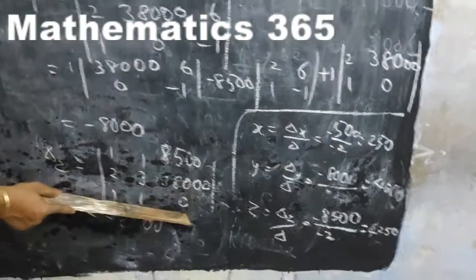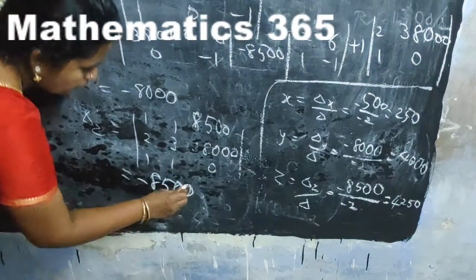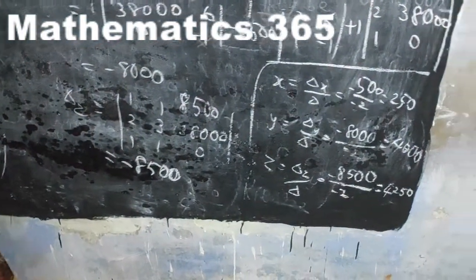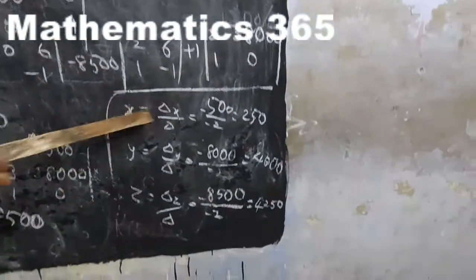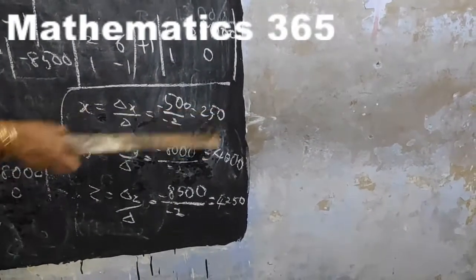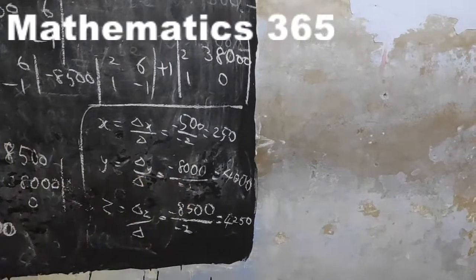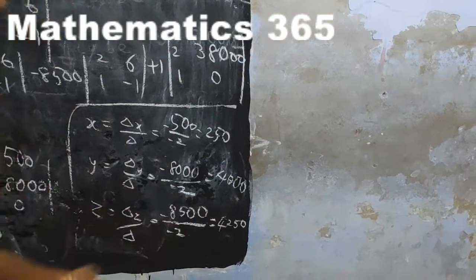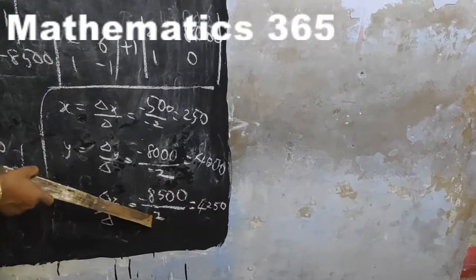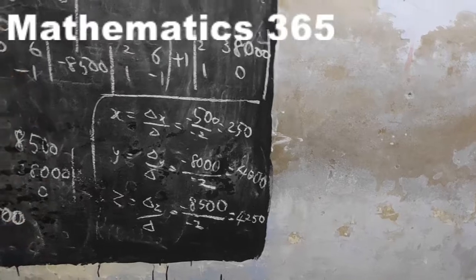Delta Z: replace the z-column with 8500 and 3800. Delta Z equals minus 8500. By Cramer's rule: x equals Delta X divided by Delta equals minus 500 divided by minus 2 equals 250. y equals Delta Y divided by Delta equals minus 8000 divided by minus 2 equals 4000. z equals Delta Z divided by Delta equals minus 8500 divided by minus 2 equals 4250.